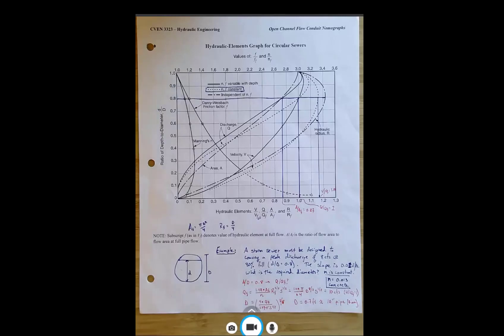I just wanted to go through an example of how to use this nomograph, which is basically Manning's equation solved for a circular pipe. This nomograph is what is in the FE exam resource booklet.